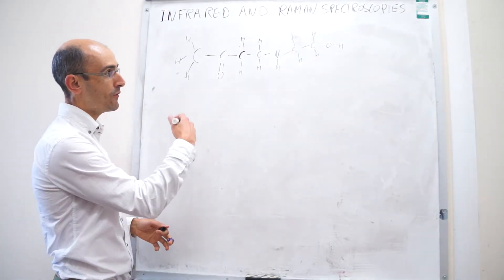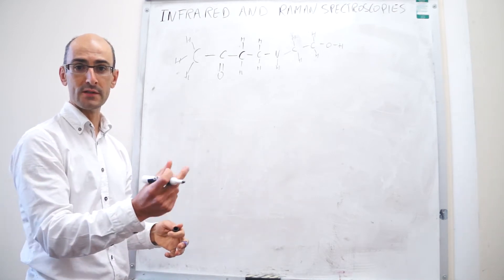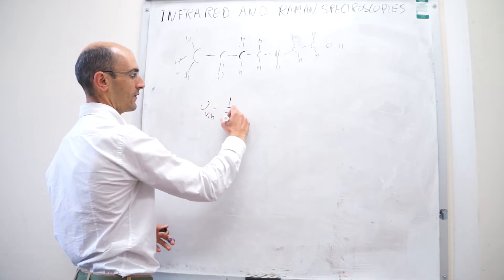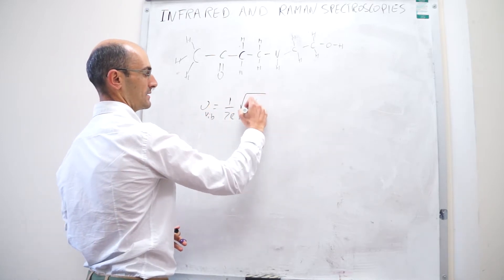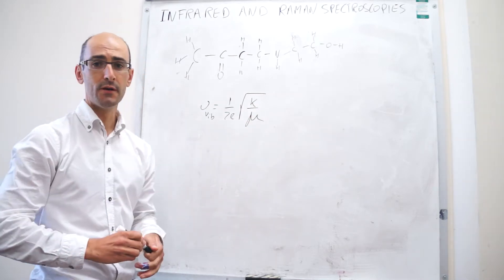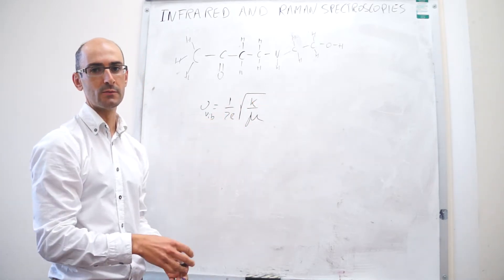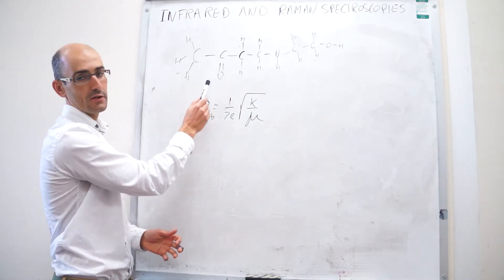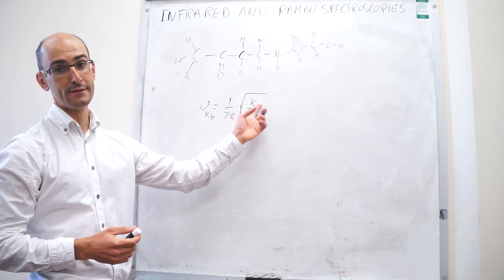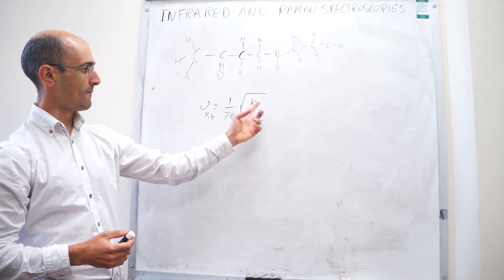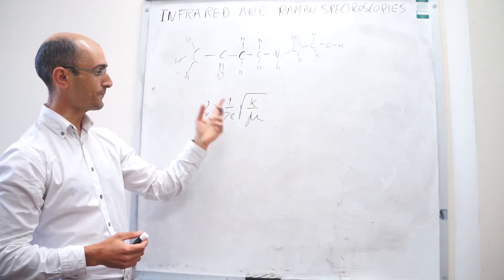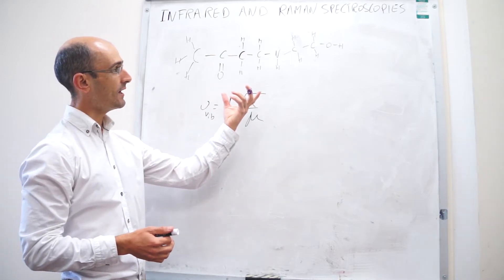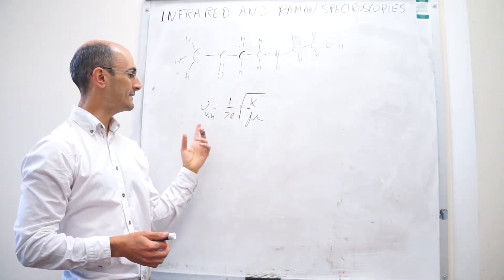If you think about where those normal modes' frequencies would be, you can always think about this expression. The vibrational frequency under the harmonic approximation is this. Notice that in all of these bonds, there's going to be something about the vibrational frequency that is going to be different. For example, if you compare a CH stretch with a C double bond O stretch, you can see how the force constant will be different — that's a double bond, much stiffer force constant than a single bond — and also the reduced mass will be different. This means that every single type of normal mode will absorb at a different frequency.